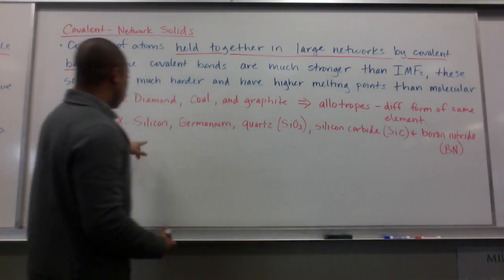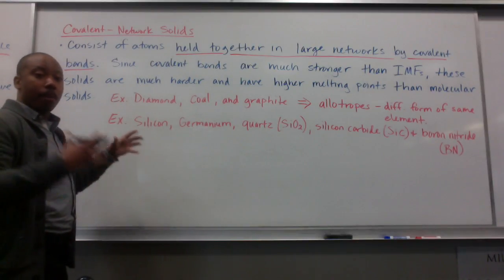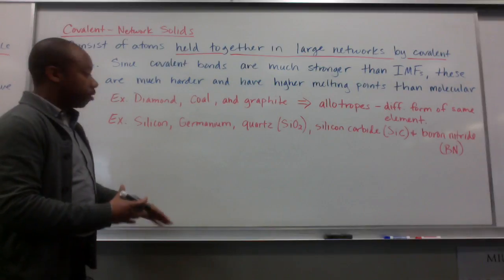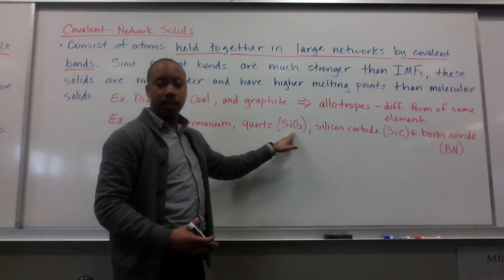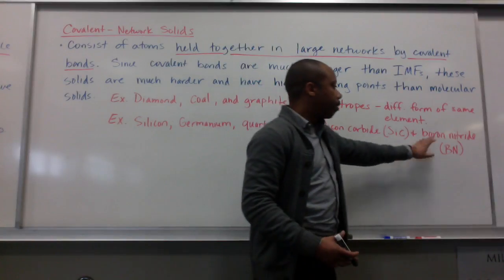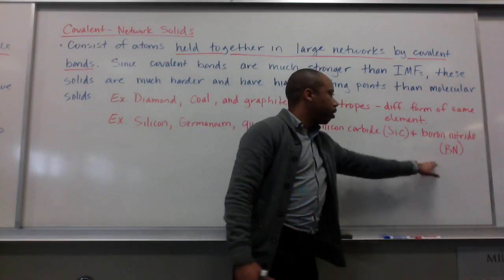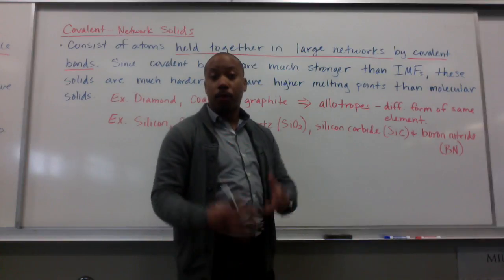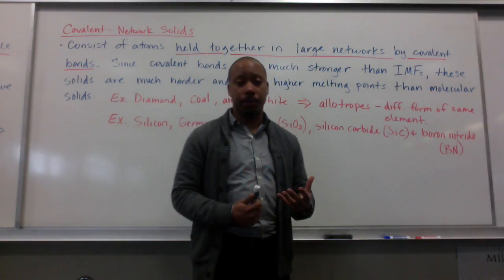Some other examples include silicon — the way it stacks together makes a covalent network solid — as well as germanium, quartz (which is silicon dioxide), silicon carbide, and boron nitride. These may not be well known to you, but they are very hard and durable substances.